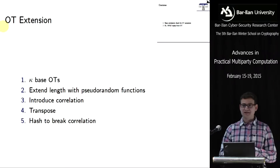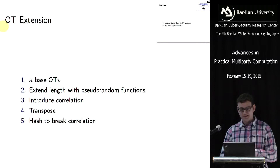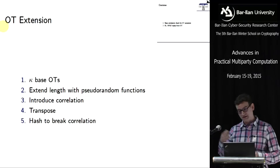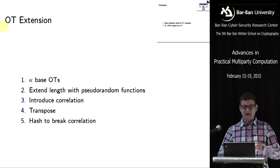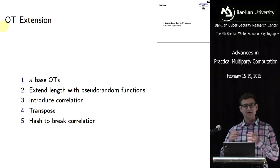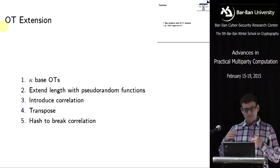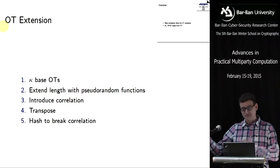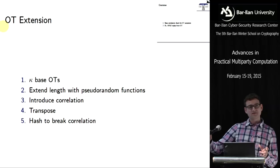A short reminder about OT extension that we have all seen this week quite a few times. We start with a bunch of base OTs — kappa base OTs — and kappa is more or less going to be one of our security parameters. They can be relatively short, and if they're short we extend the length with a pseudorandom function. Then the next step is introducing the correlation, and this is basically where the whole situation becomes symmetric, because correlated OT is somewhat symmetric and this allows us to reverse the role of sender and receiver.